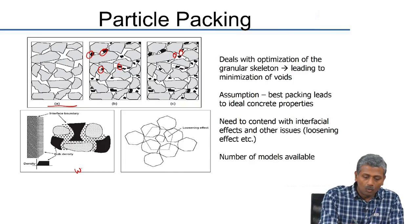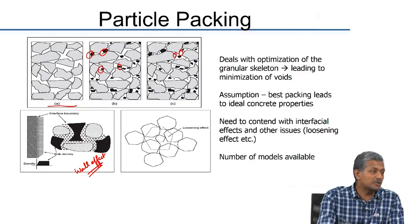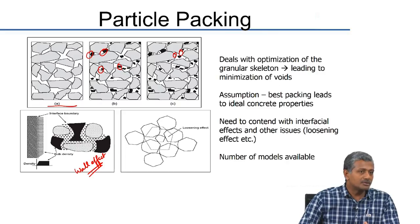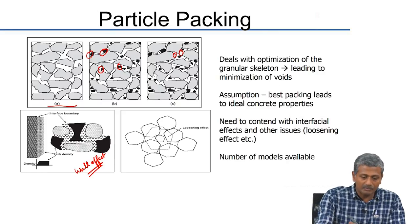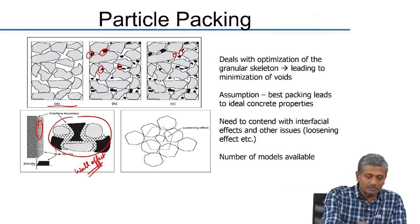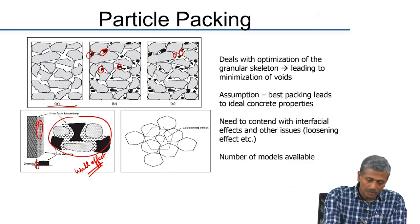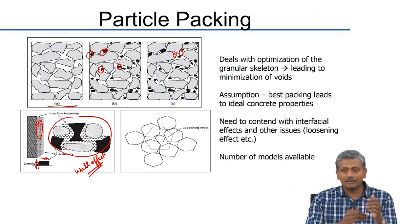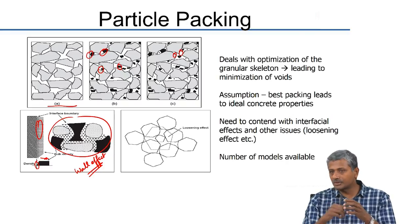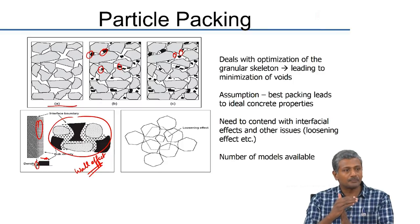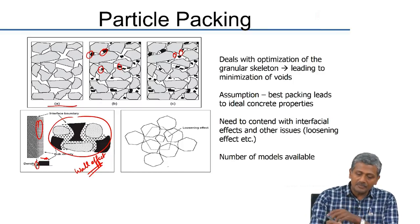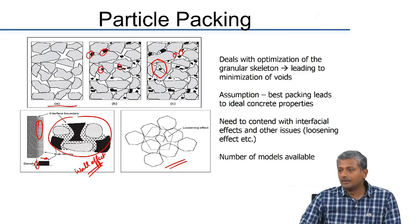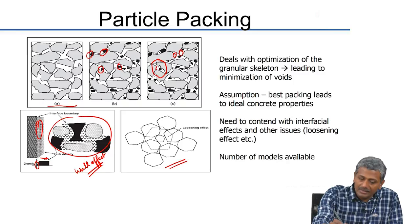This is where the concept of particle packing started becoming popular. This concept is not new — it has been applied in the powder metallurgy industry for a very long time, where they make castables from powders by combining different types of powders based on size gradations into one ideal gradation so that packing gives maximum density. The concrete industry started adapting the same technology for mix design. When doing particle packing measurements, you may encounter two issues: the wall effect and the loosening effect.